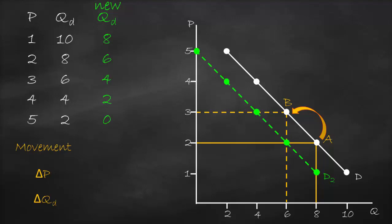We label this new demand curve D2. Our demand curve has shifted to the left from D to D2 — this is an example of a shift. A shift of the entire demand curve occurs when any factor other than the price of this product changes; we call these non-price factors. This includes the price of another product. When the demand curve shifts, we have a new demand curve, and this is called a change in demand.